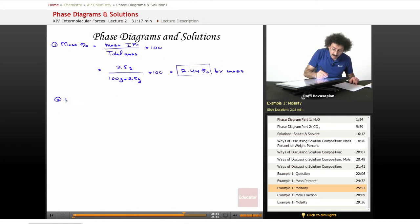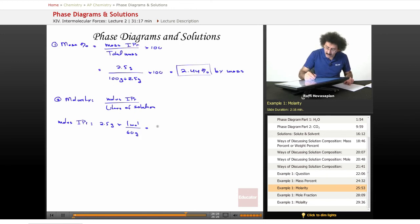Number two, molarity. Molarity is the moles of isopropanol over liters of solution. Here we have some conversion that we need to make. Let's talk about moles of solute first, moles of isopropanol. We have 2.5 grams and 1 mole of isopropanol is 60 grams. So we end up with 0.0417 mole. We have the numerator.